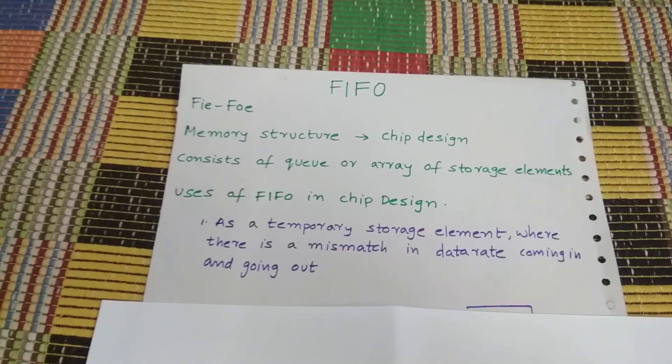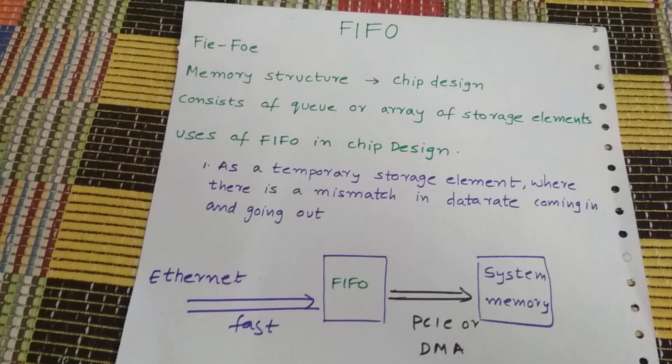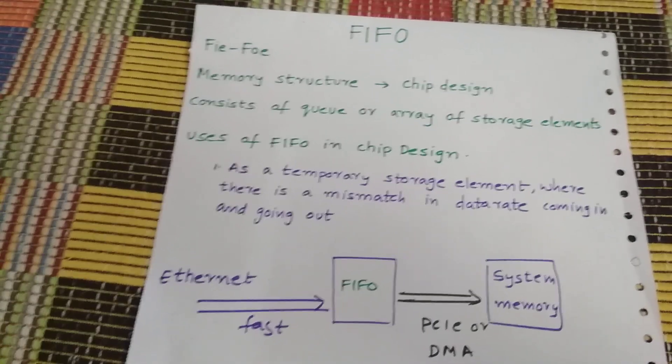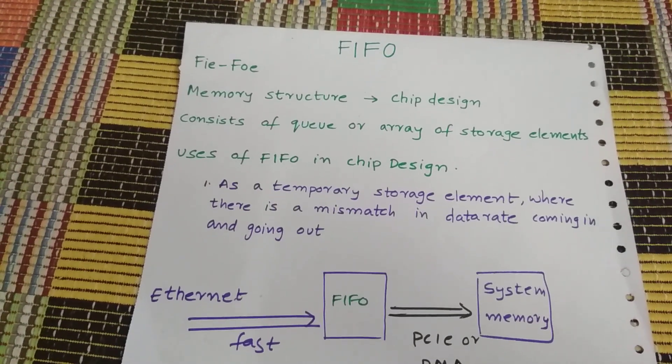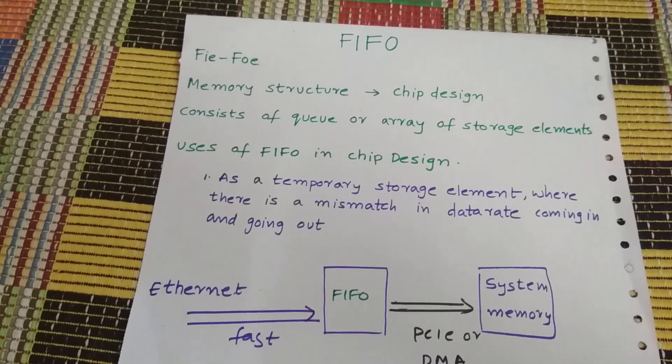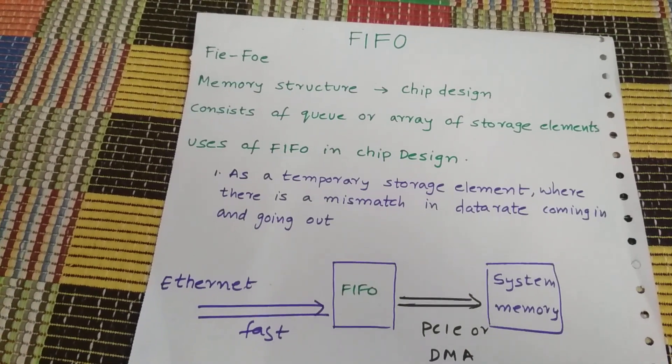So what's a mismatch in data rate? For example, a CPU can write data into the FIFO and continue with other activities, and the device can read the data from the FIFO at its own convenience. So let's take an example.